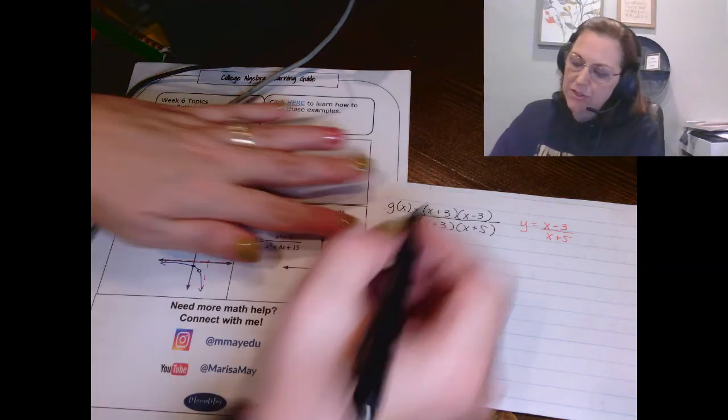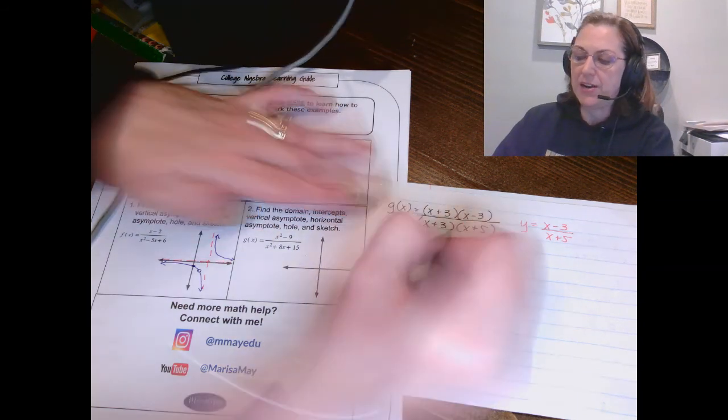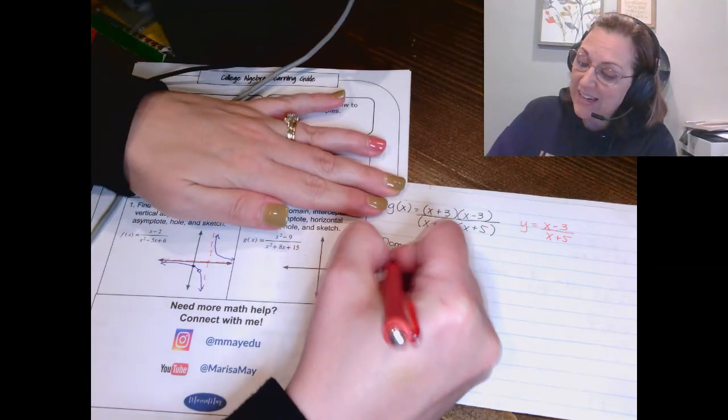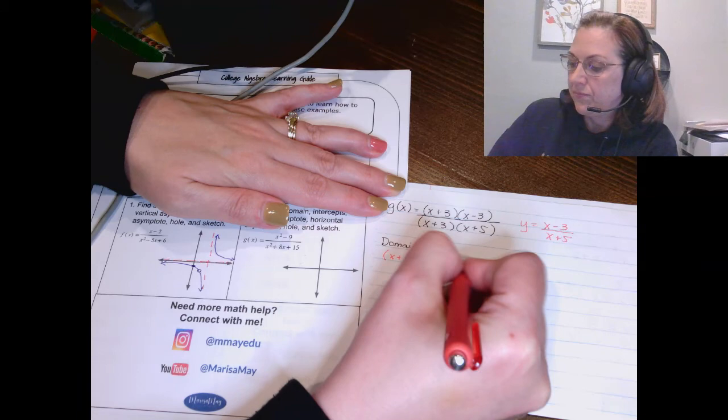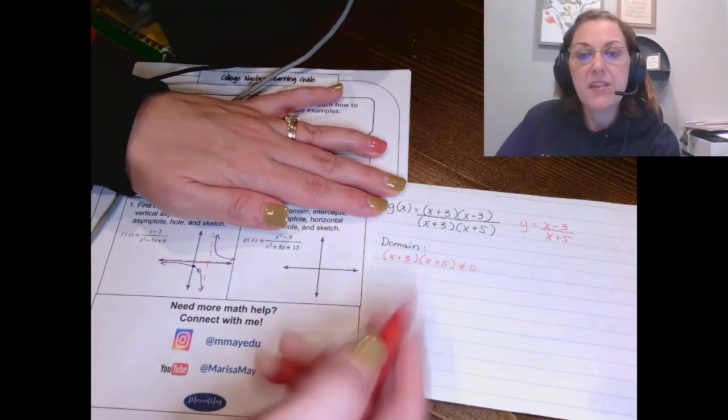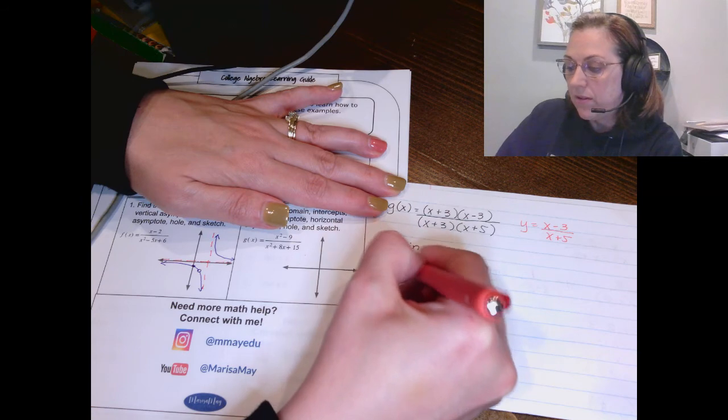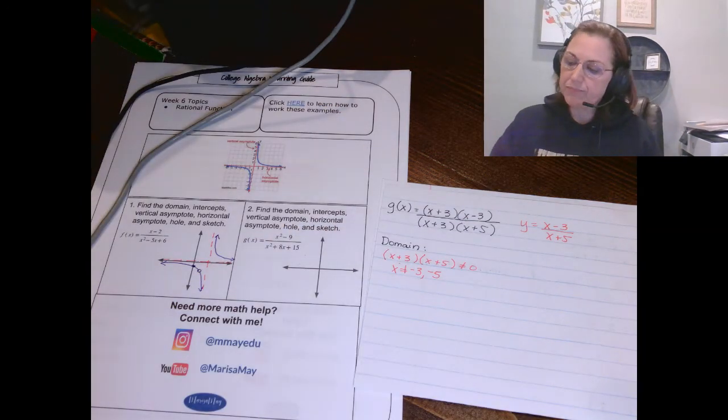Domain first. Domain is to take your original denominator and set it equal to 0. Or you say that it cannot equal 0. That means that x can't be negative 3 and x can't be negative 5. That's our domain.